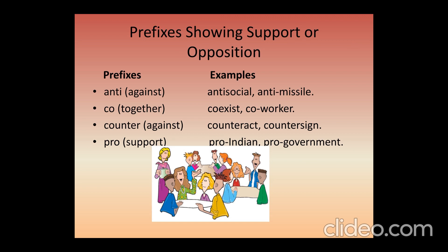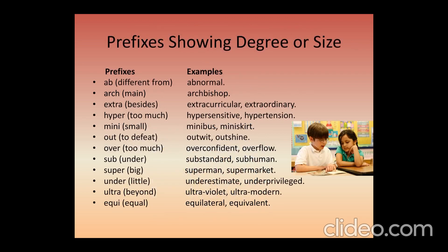Here is a list of prefixes which show support: co-exist, co-worker. Then prefixes of degree and size: normal → abnormal, extracurricular, mini-bus, mini-skirt. 'Out-' means to defeat or surpass — outwit, outshine. 'Over-' means too much — overconfident, overflow. 'Ultra-' means beyond — ultraviolet, ultramodern.